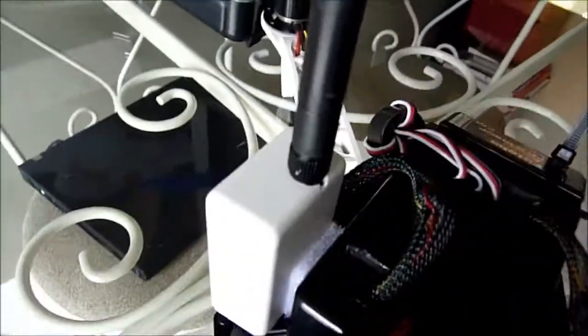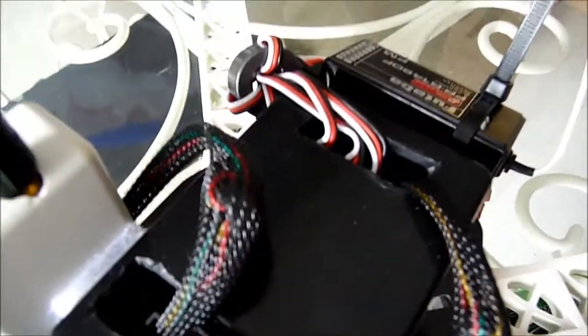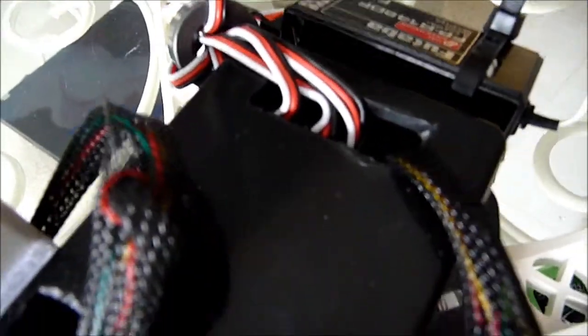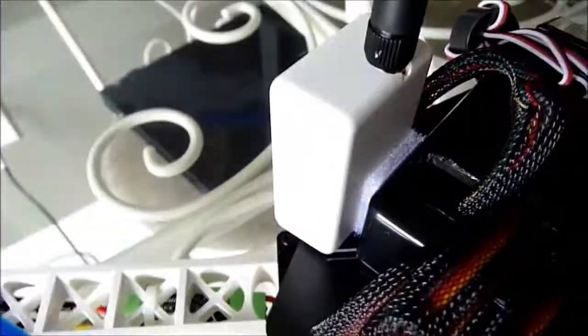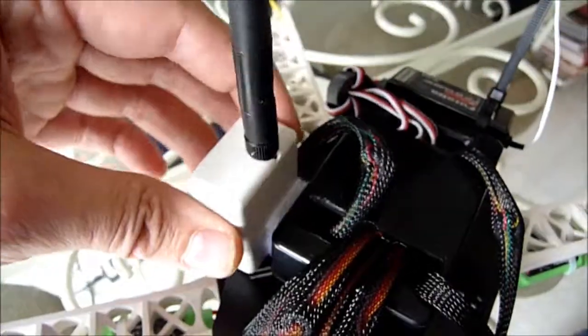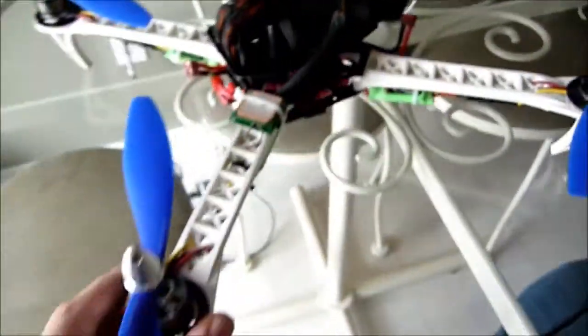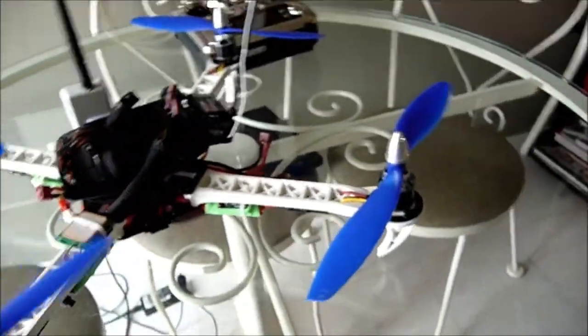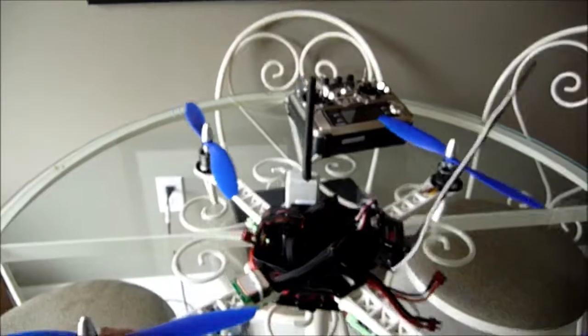Some of the boxes here—the box where the APM is. I kind of butchered it up a little bit, just cut it with the Dremel. And then I got the telemetry box on the side here with the antenna. So that's it.